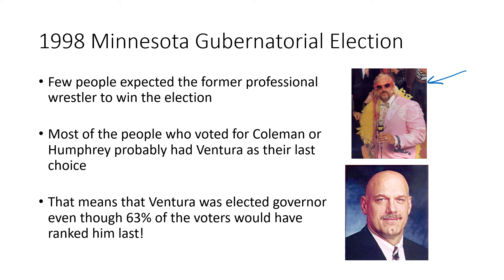Many of the people who voted for the Democrat or the Republican probably would have ranked Ventura as their last choice. That means Jesse Ventura became governor of Minnesota even though 63% of voters — that's 100% minus the 37% Ventura received — really disliked the candidate who ended up winning. This gets labeled as unfair in some sense, even though everybody got to vote and every vote got counted, because the outcome doesn't seem to match what voters actually wanted.